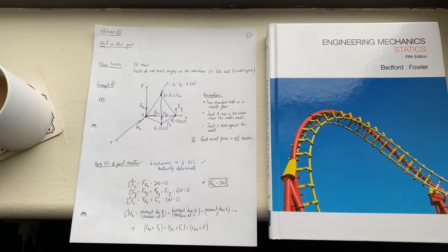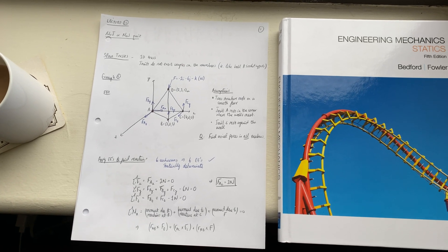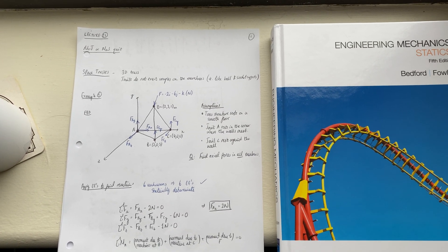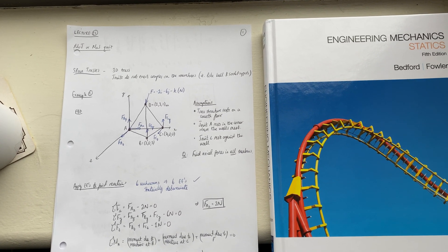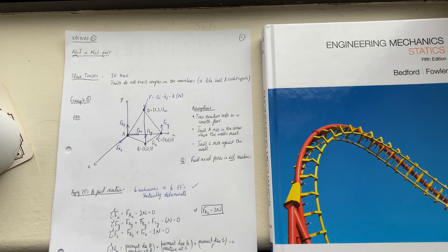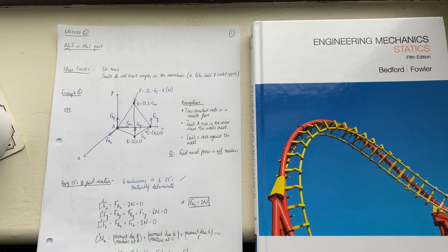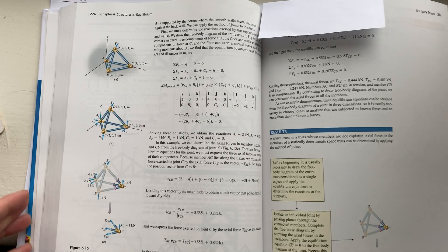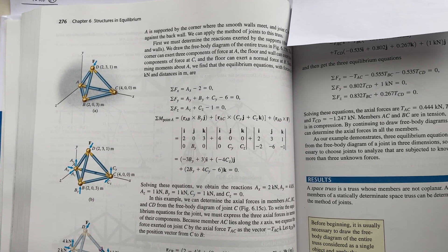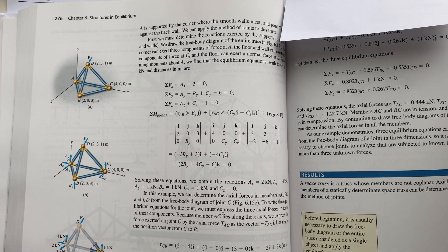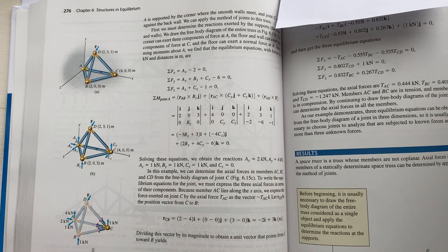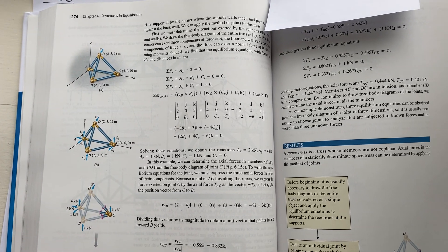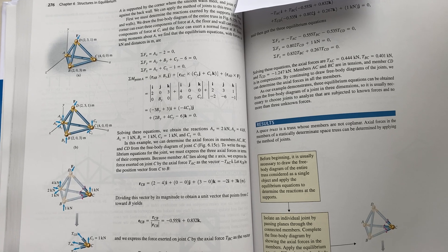You'll remember the example that we started was on a topic called space trusses, which is basically the 3D extension of the trusses that we were considering in the weeks previous. The example that we were going through was based on this example here from the textbook — it's on page 276, and it's a worked example showing how to work through the various stages of solving this 3D truss problem.